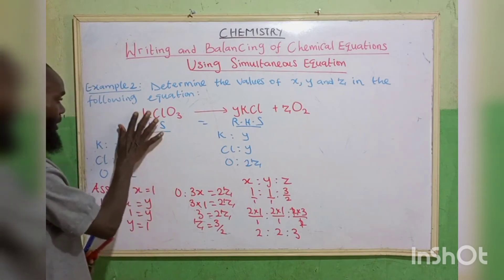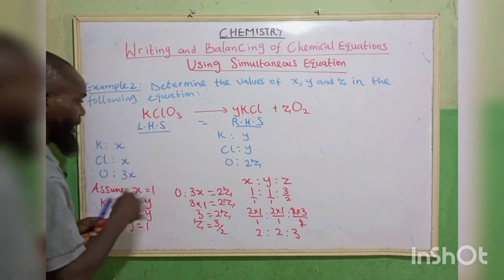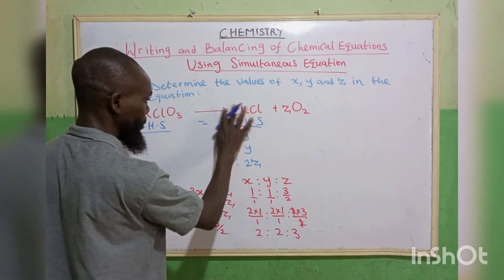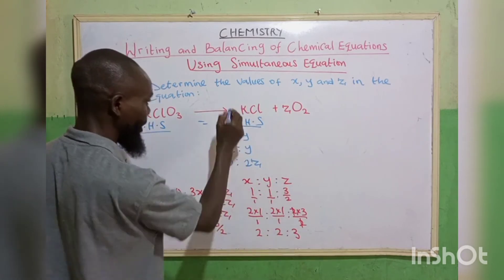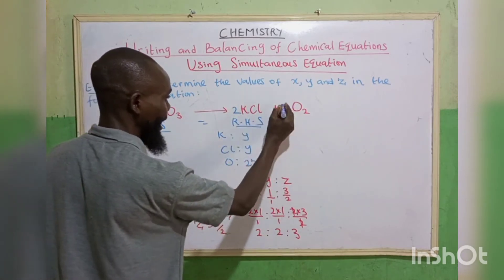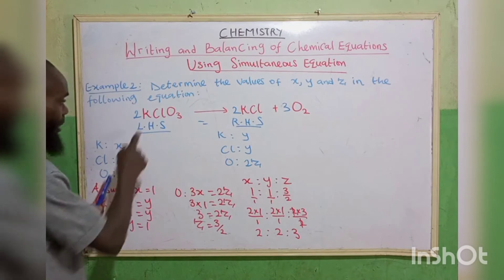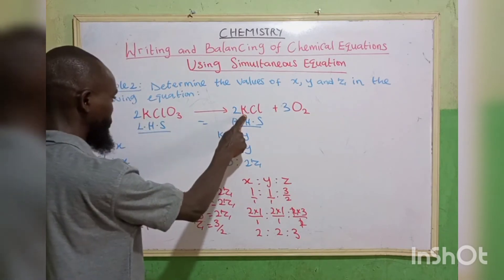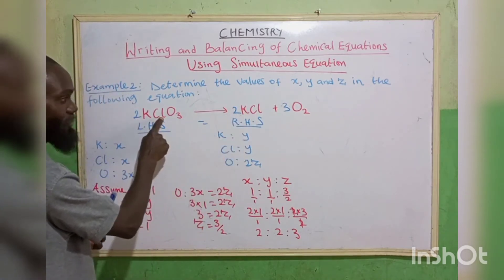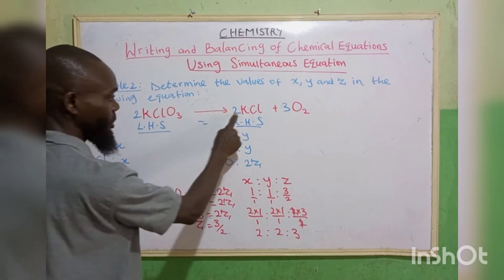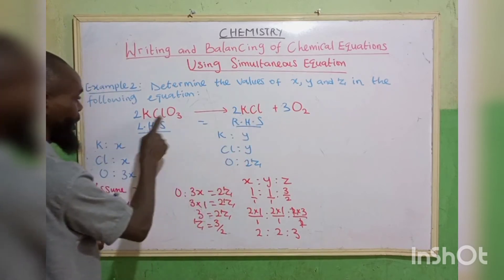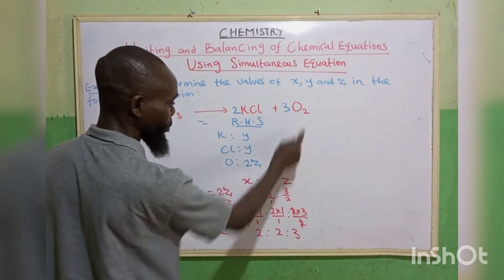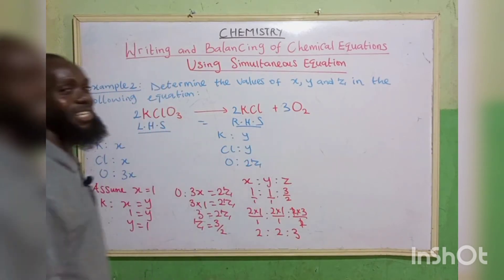Substituting back: replace x with 2, y with 2, z with 3. How many potassium on the left? 2. How many on the right? 2. How many chlorine on the left? 2. On the right? 2. How many oxygen on the left? 2 multiplied by 3 making 6. On the right, oxygen is 3 times 2 giving 6. Balanced.